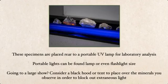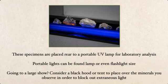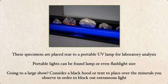These specimens are placed near a portable UV lamp — you've probably seen quite a few of these. Portable lights can be found lamp- or even flashlight-sized. If you're going to a large show and expecting to look at fluorescent minerals, bring one along. Some people even bring a small tent to put over minerals on a dealer's table to reduce extraneous light and get a better grasp of how the minerals fluoresce.